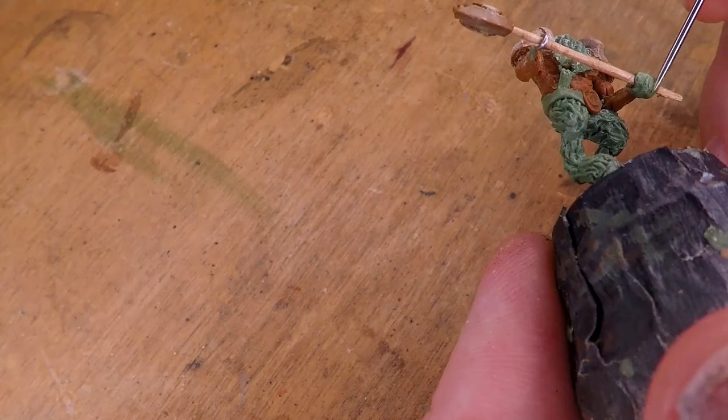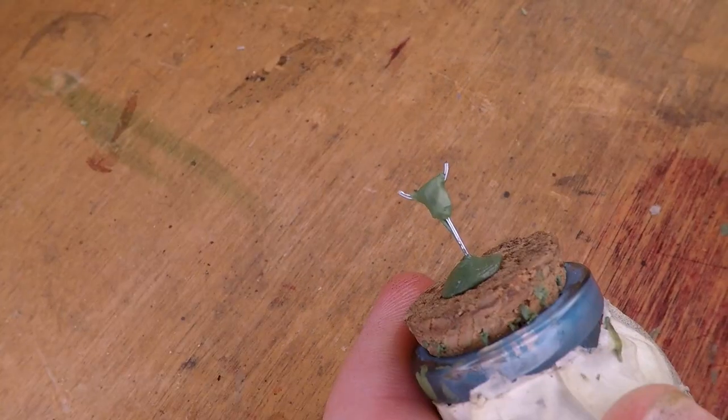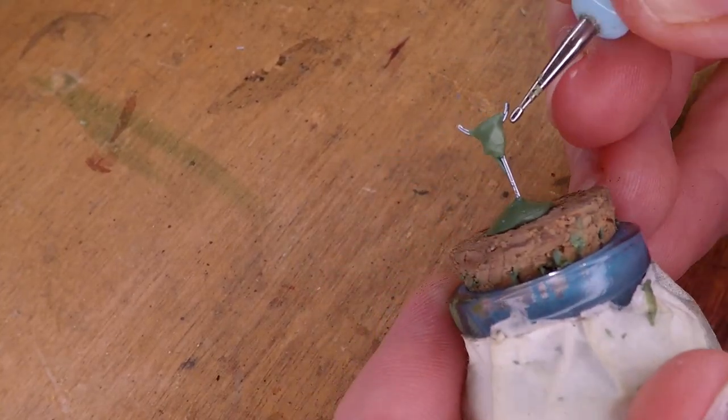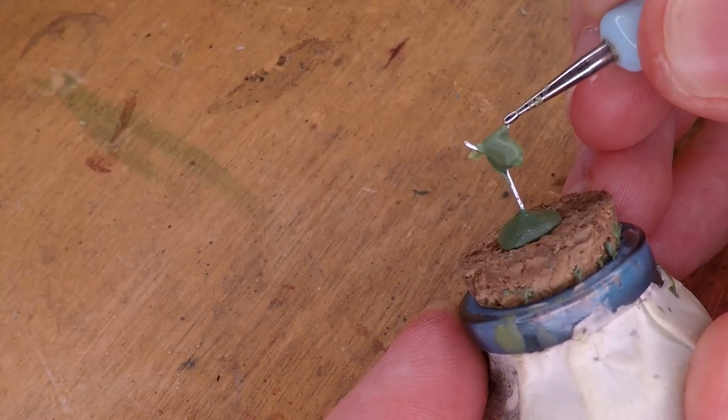Then I go in with a little bit of green stuff to sculpt the hands for the minotaur. Then to finish up the miniature I make the head of the minotaur just out of green stuff like I normally would.